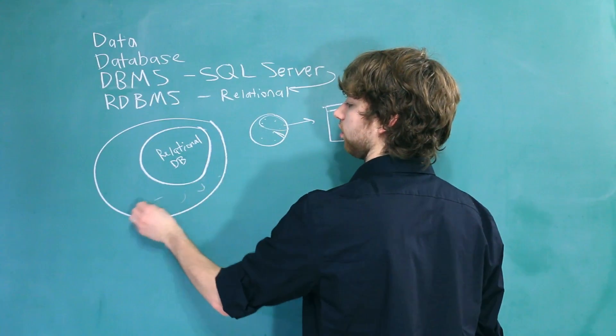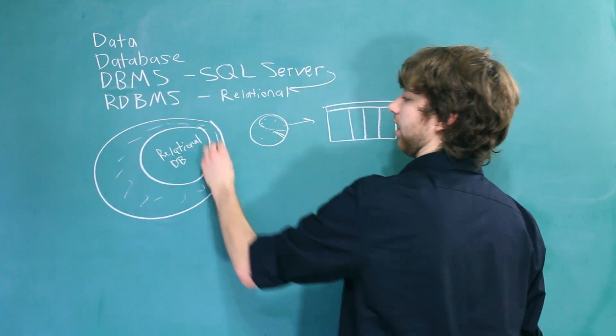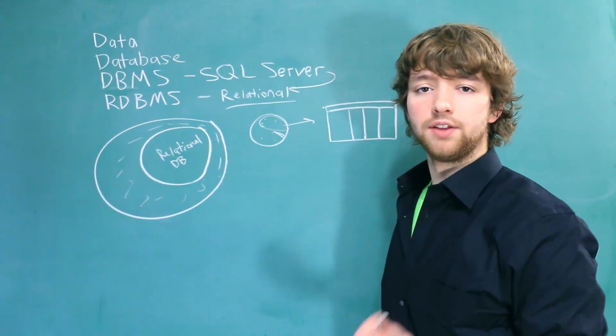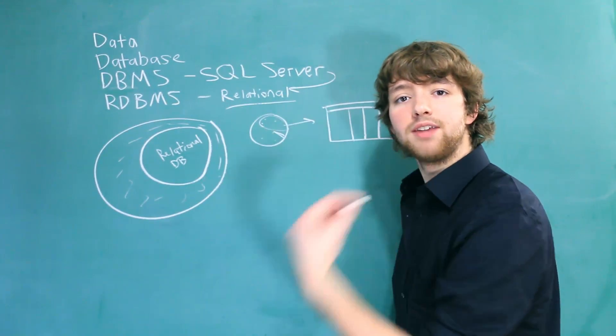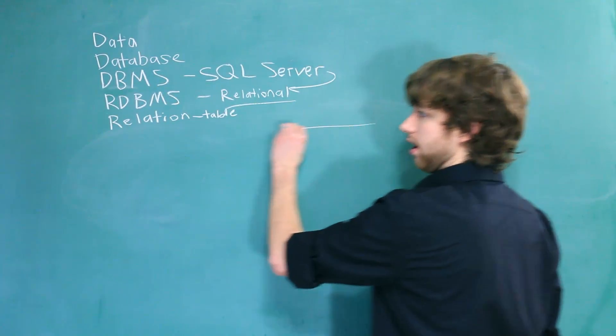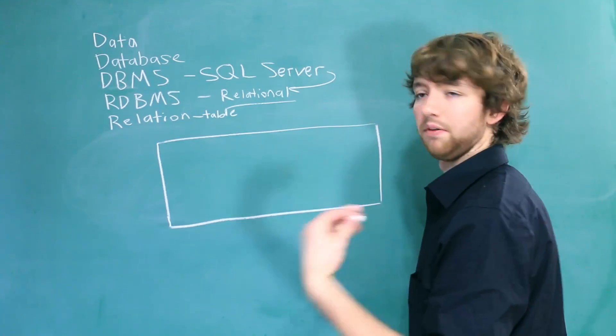For example, we still have all of these ones out here that are not relational. Now, the important thing to take away from these words is relational. That's a fancy word that means table. Now, what exactly is a table? Well, you can think of it as a square. And this table is going to have a name.